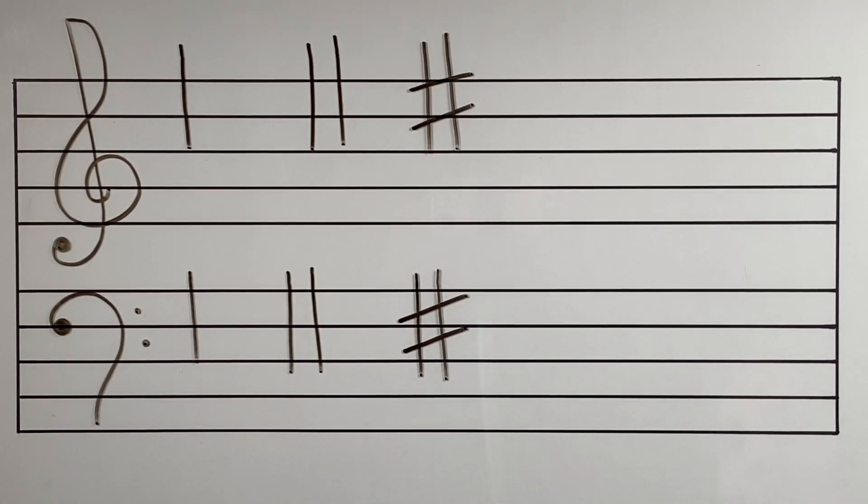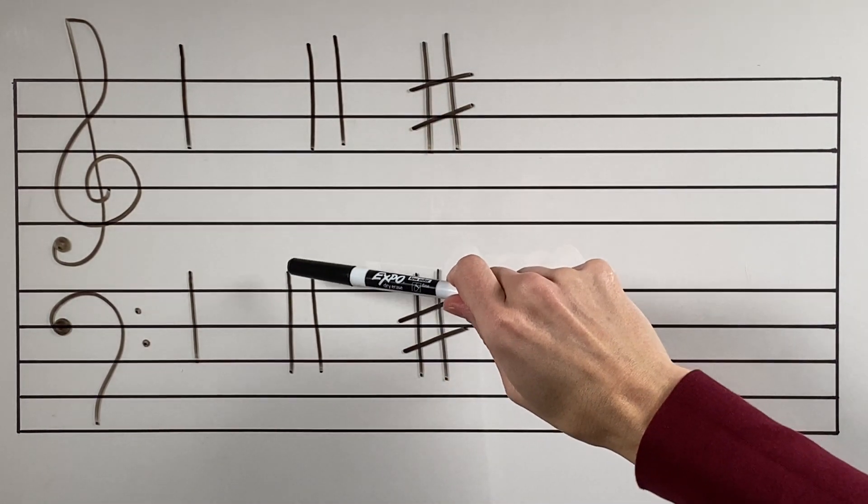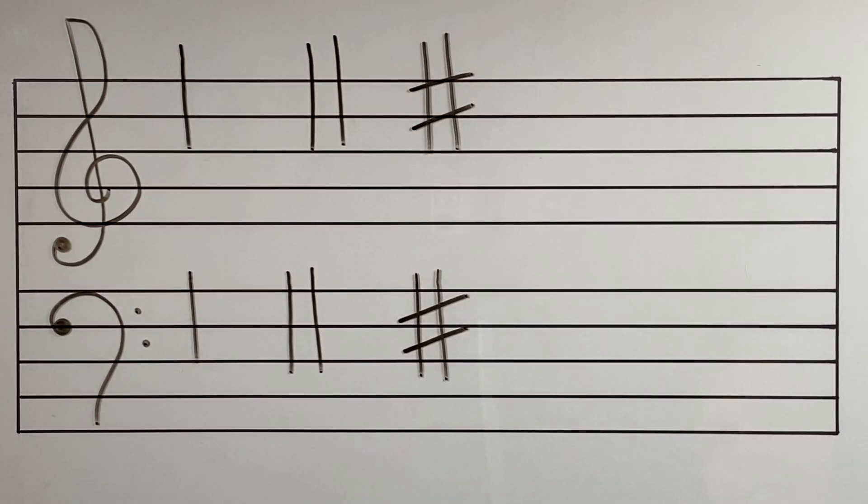The first thing you want to do is draw a straight line down for both of these. Then you want to draw another line that's parallel next to it so you have two lines together.